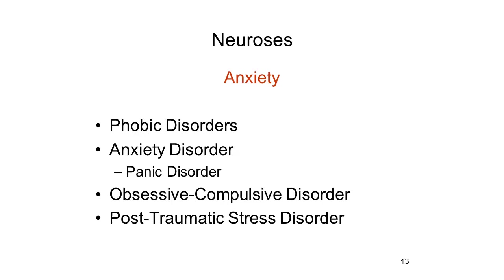The neuroses include a variety of phobic disorders, all of which entail excessive, unwarranted, and irrational fears of specific objects and situations, such as snakes and spiders, heights, open spaces, or public places. In contrast, anxiety disorder is characterized by a free-floating state of apprehension and worry—anxiety unattached to any specific object.